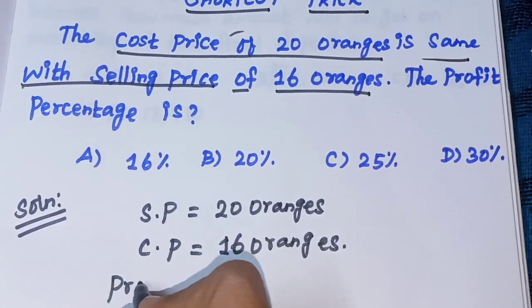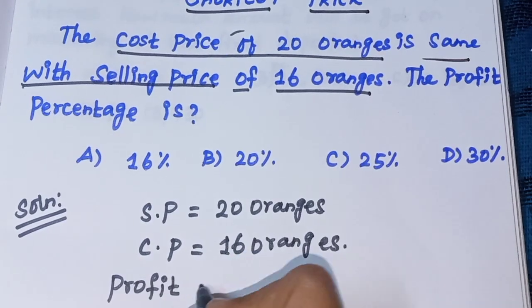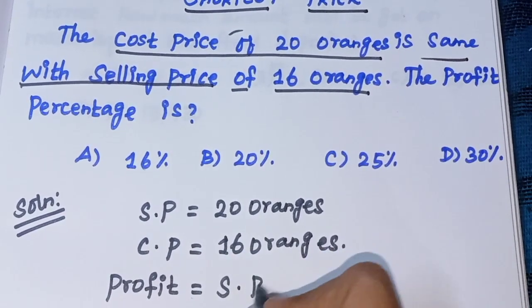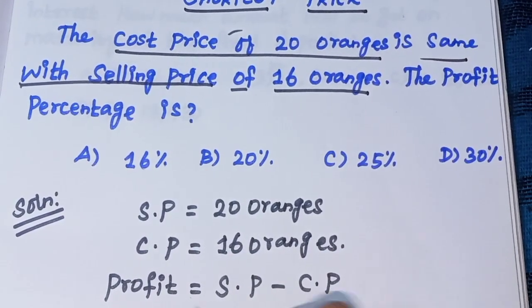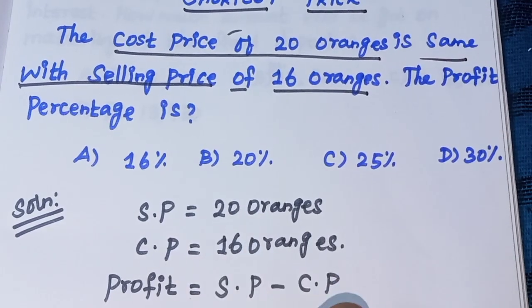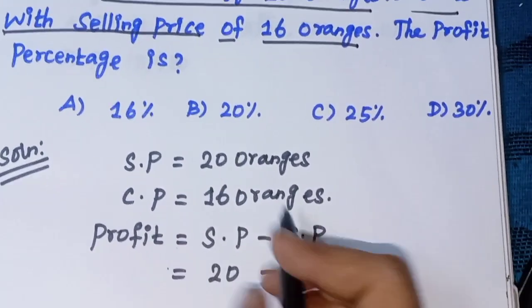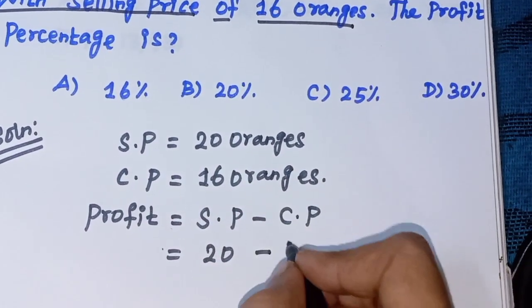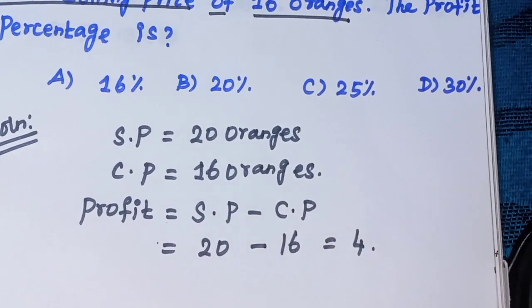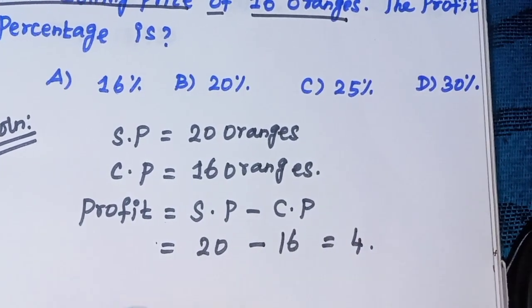So to find the profit percentage, profit equals selling price minus cost price. Selling price is 20, cost price is 16, so 20 minus 16 equals 4. The profit is 4.